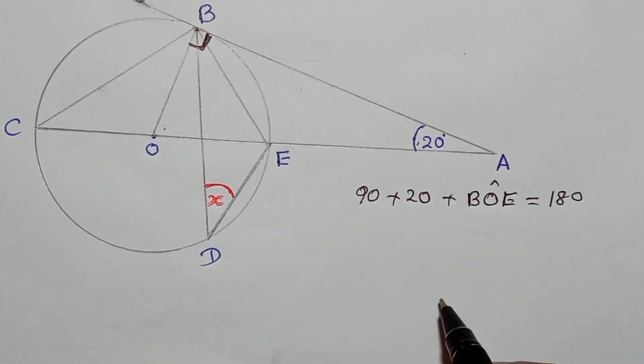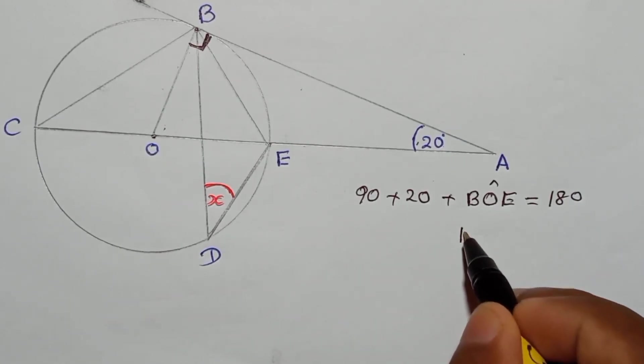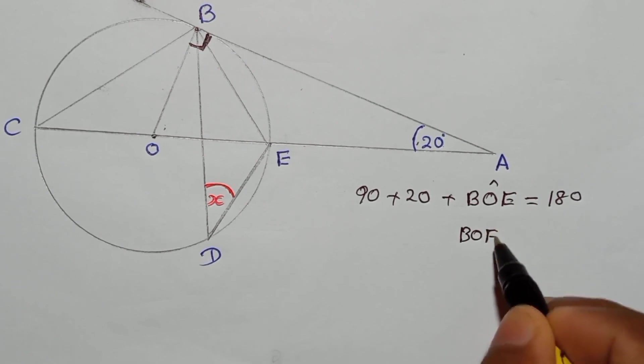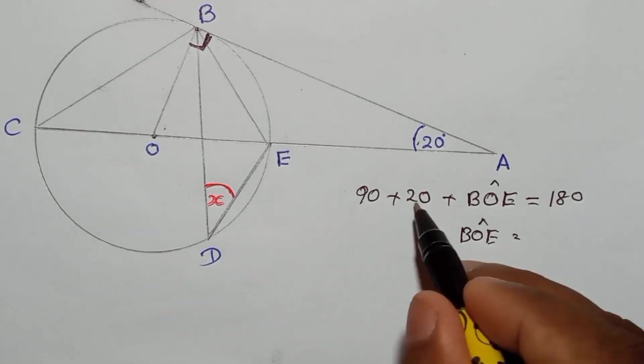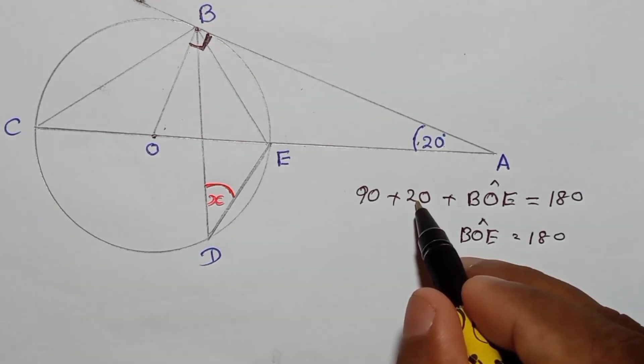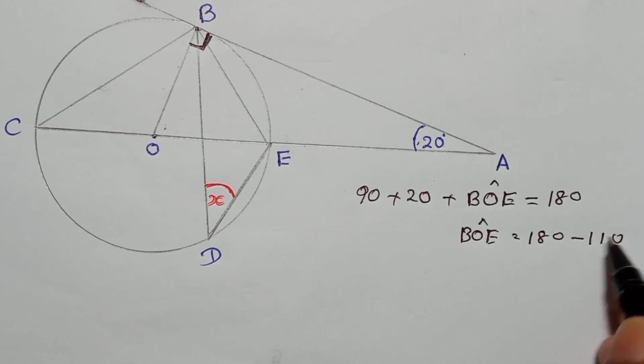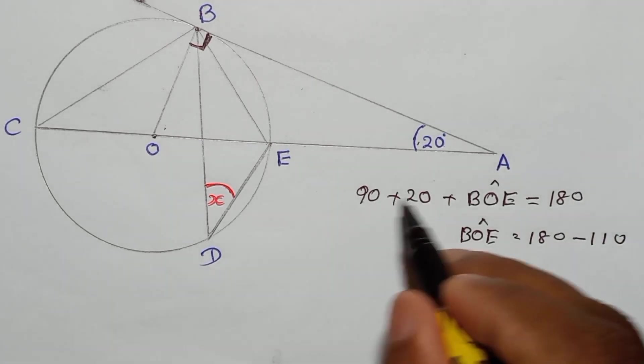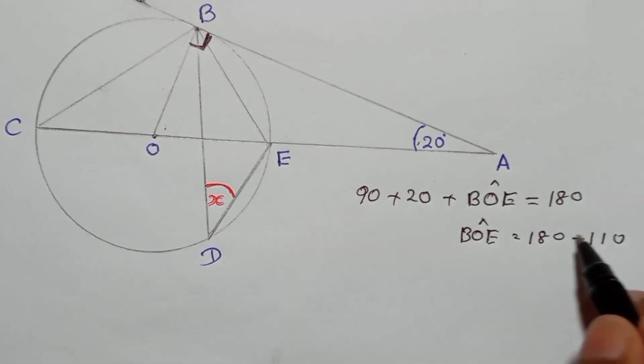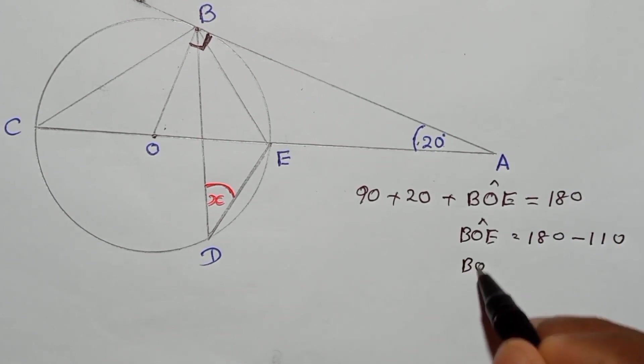Now if you solve this, you can find BOE. I will add these two and bring to this side. 90 plus 20 means 110. If I bring it to here, it will be minus. When you add here plus 110, when I bring it to here, it will be negative 110. So here will be BOE equal to 70.